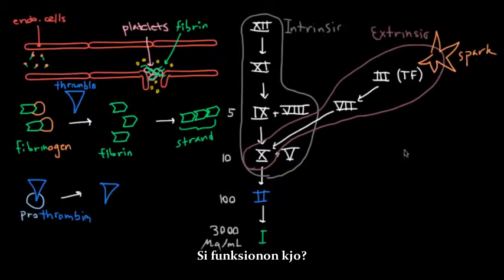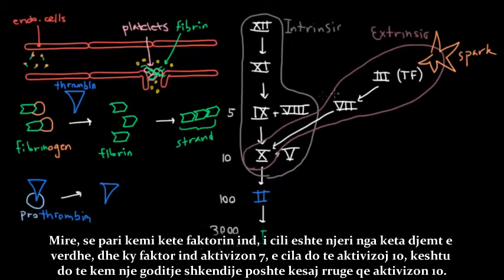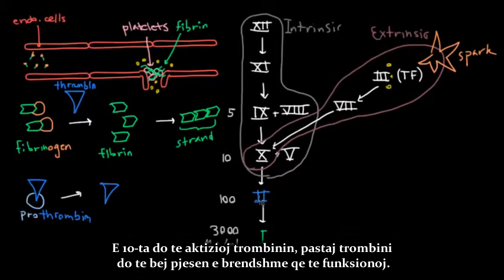So how does that work? Well, you first get this tissue factor, which is actually one of these little yellow guys. And that tissue factor activates 7, which activates a little 10, so you get a shot, a spark that shoots down this way and activates a little bit of 10. And then 10 will activate a little bit of thrombin. And then thrombin will get the intrinsic workhorse going.